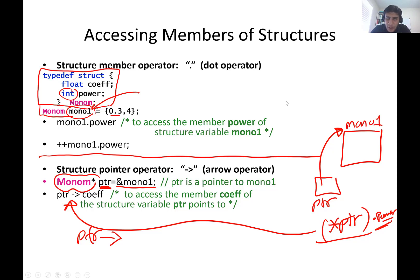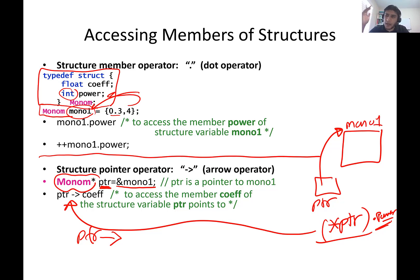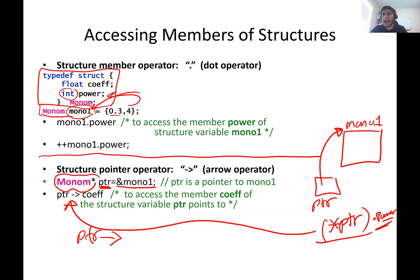The order in which variables are declared in the structure determines the order of initialization — the first value always corresponds to the first member, second to the second. This is not new to structures; it's the convention in any programming language. Similarly, when you call a function, you pass input parameters in order — the first goes to the first, the second to the second. The order is the convention between the object and the members of the structure.